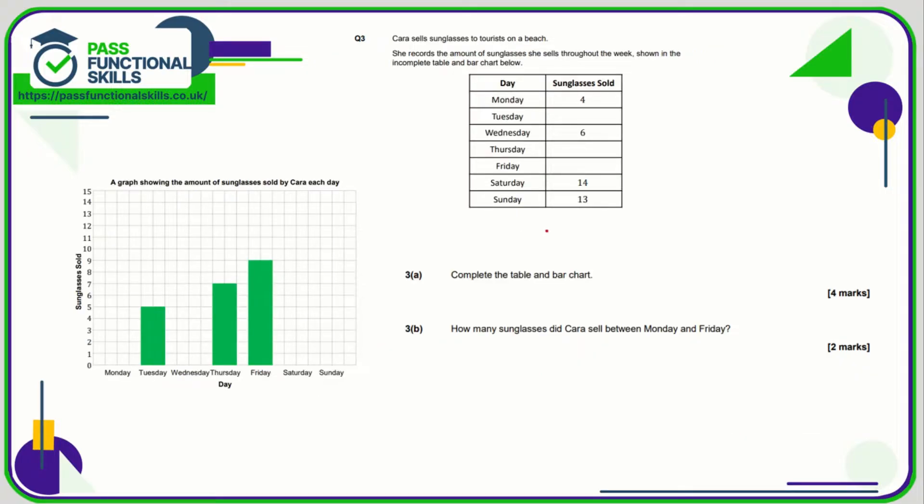Question three, we need to complete the table and the bar chart. Well let's complete the table first of all. So Tuesday is 5, Thursday is 7, and Friday is 9. So we need to fill in for the remaining days, so Monday, Wednesday, Saturday, and Sunday. We can see that all these columns are two wide.